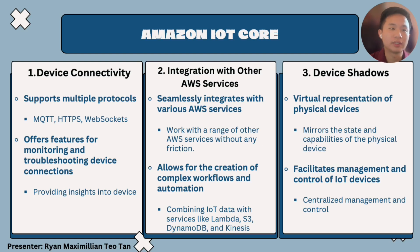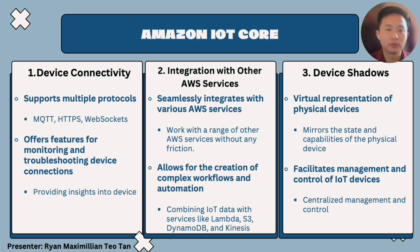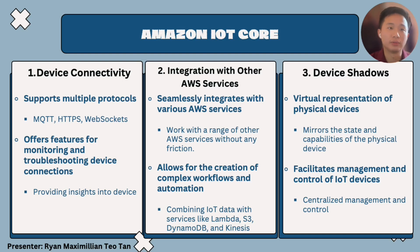By combining IoT data with services like Lambda, S3, DynamoDB, and Kinesis, users can streamline automation of various tasks and processes within their IoT applications. Third is device shadow — a virtual representation of the physical device that mirrors its state and capabilities. We can create a device shadow so the system will assume that the physical device is present. Applications can create and update the state of a device shadow, which in turn reflects changes on the physical device, enabling centralized management and control.